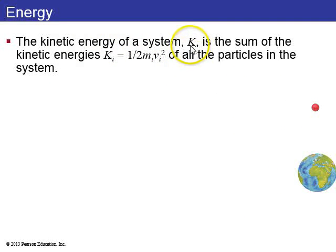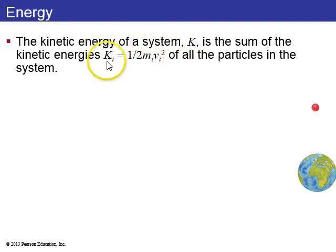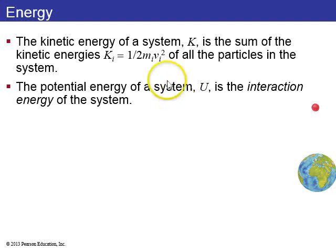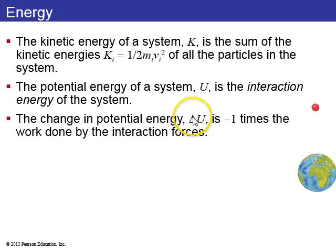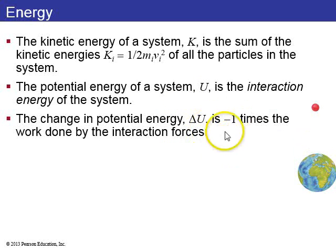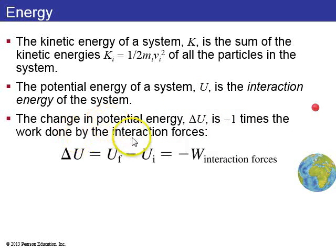First I want to talk about energy in general — kinetic and potential energy. If you have a system of particles, the kinetic energy of the system is the sum of the kinetic energy of all the little particles in the system. The potential energy U is the interaction energy of the system, and the change in U is negative one times the work done by the interaction forces.